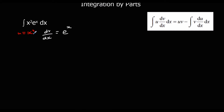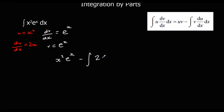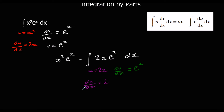So u = x², giving du/dx = 2x. Since dv/dx = eˣ, v = eˣ as well. Applying the formula: uv gives x²·eˣ, minus the integral of v·du/dx which is 2x·eˣ. To integrate that second part we need to do integration by parts again. We set u = 2x and dv/dx = eˣ, which gives du/dx = 2 — we've finally simplified it — and v = eˣ.